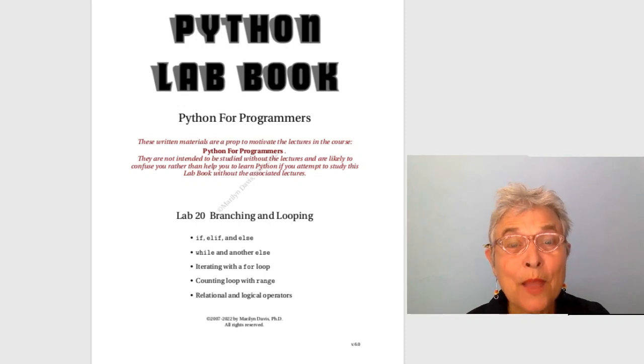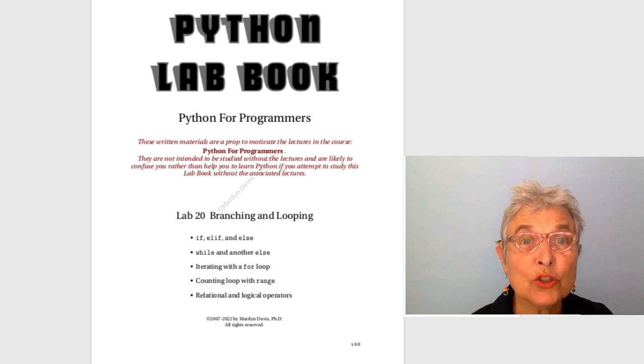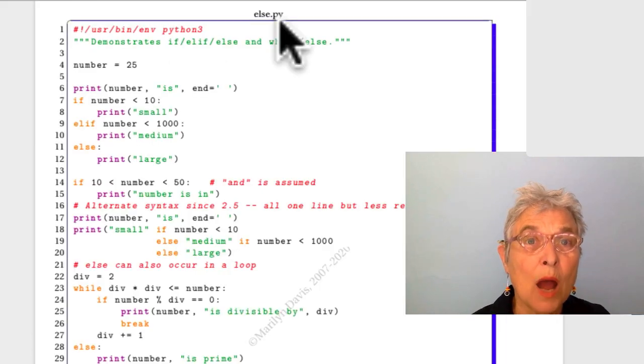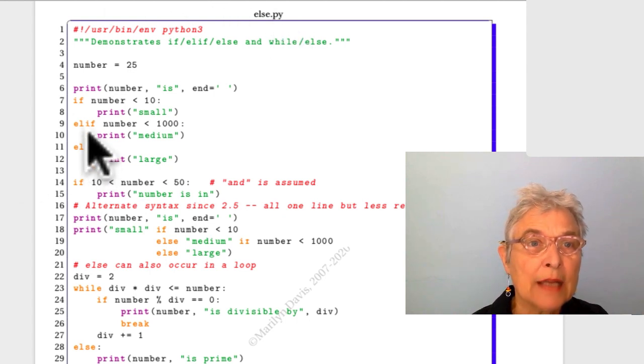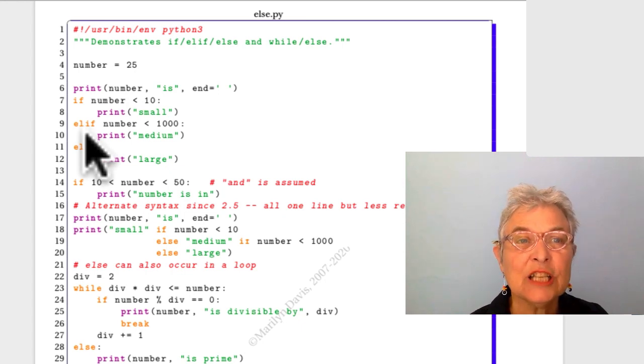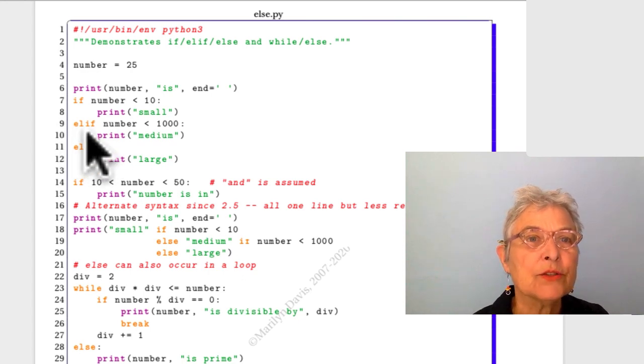Welcome back. Let's take a look at branching and looping in Python. This is our lab 20. We have the module else.py. I'll give you a big hint. The reason for this module really is just on line 9, so you get that keyword elif. That's the least English-like keyword in the language, elif. And it means exactly what you think. Nothing else is too surprising.